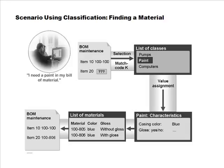When creating a material master record, you have to manually assign the material to all the classes you want it to belong to — there is no automated mechanism. For example, even if you name something a pump, SAP doesn't know it's a pump until you assign it to the relevant class. You must assign it to whatever classes you think it belongs to.